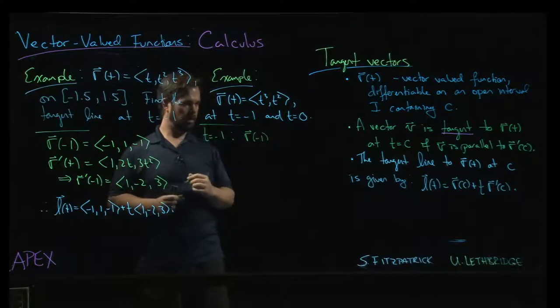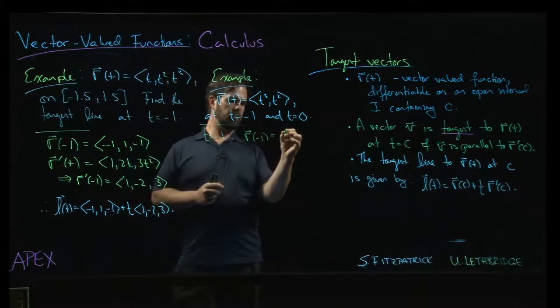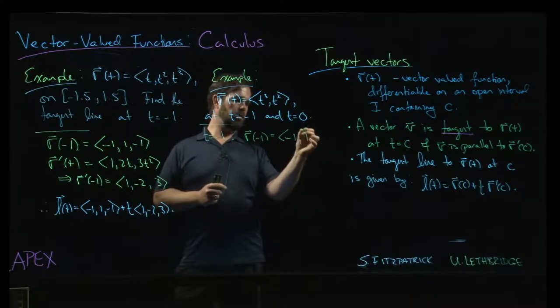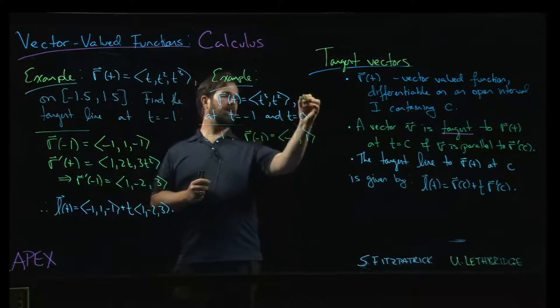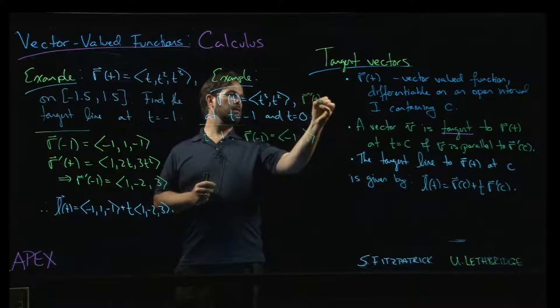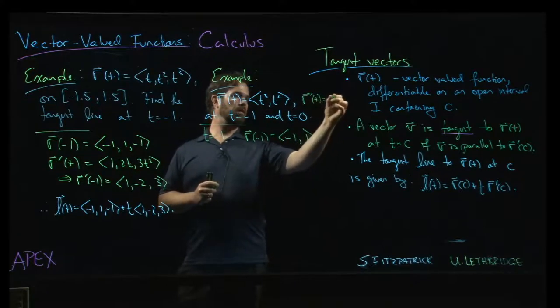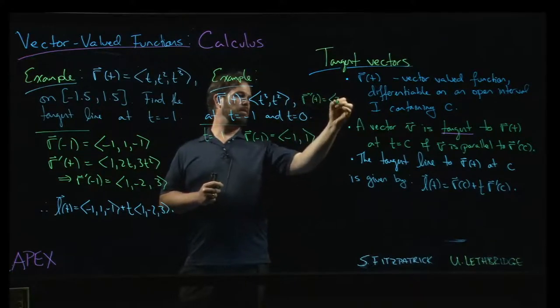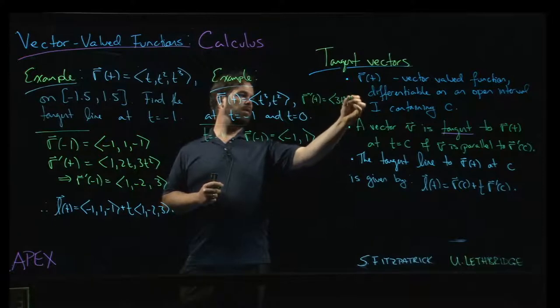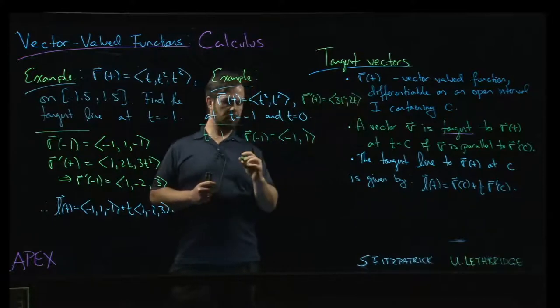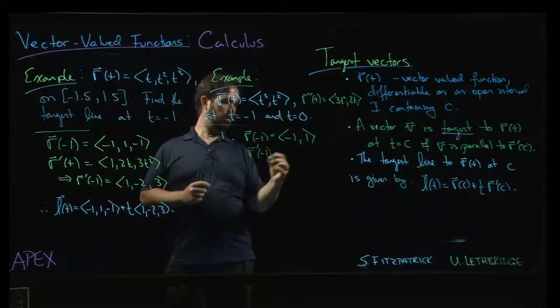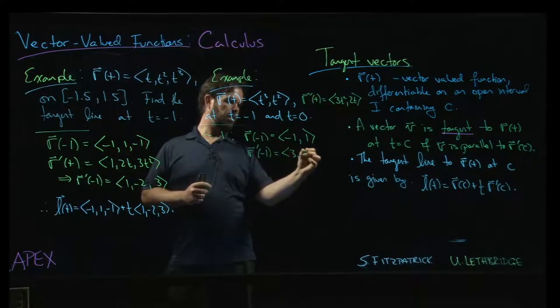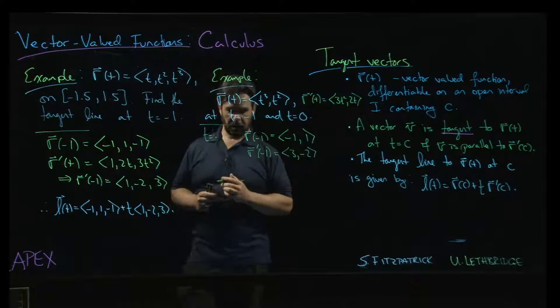r at minus 1 is going to be minus 1, 1. Now r prime of t here is going to be 3t squared, 2t. So r prime at minus 1, we get 3 and negative 2.